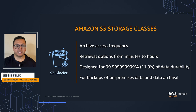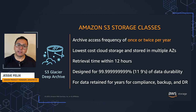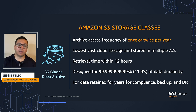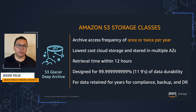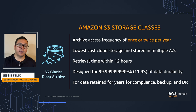S3 Glacier is ideal for long-term backups and archival of data. S3 Glacier Deep Archive is the lowest cost cloud storage and is ideal for long-term data archival and digital preservation for data that may be accessed once or twice a year. When needed, data can be retrieved within 12 hours. You can replace your on-premises tape libraries and archiving your coldest, least active data to S3 Glacier and Glacier Deep Archive to help meet compliance and regulatory requirements.